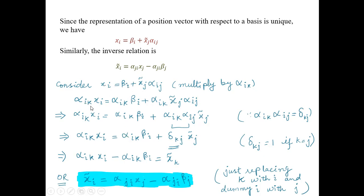To find the reverse relation, we multiply both sides by alpha-ik. Combining the transformation coefficients and using the orthogonality relation, we get delta-kj. Delta-kj is non-zero only when k equals j, so the whole term becomes XK. The remaining term, alpha-ik beta-i, proceeds similarly, and after simplification we obtain the desired relation.